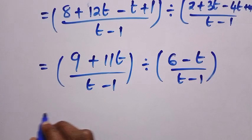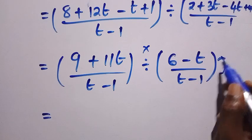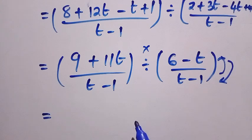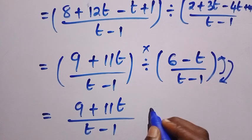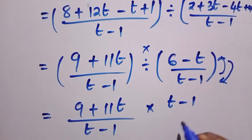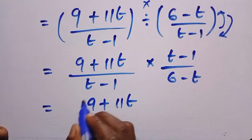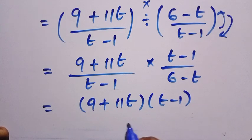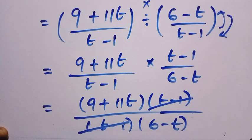Applying the reciprocal law, we change this division to multiplication, then switch the denominator fraction: t minus 1 comes up and 6 minus t comes down. We have 9 plus 11t divided by t minus 1, multiplied by t minus 1 divided by 6 minus t. The t minus 1 cancels, and we are left with 9 plus 11t divided by 6 minus t.